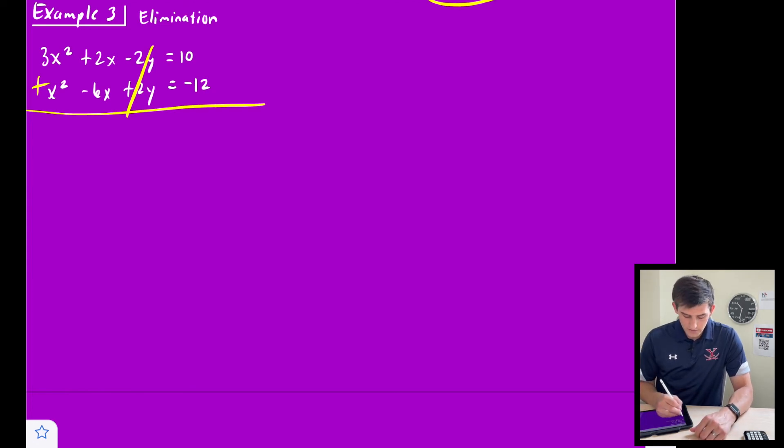So now we have 3x² + x². So that's 4x². 2x + (-6x) would be -4x. And this is equal to 10 + (-12). So -2.